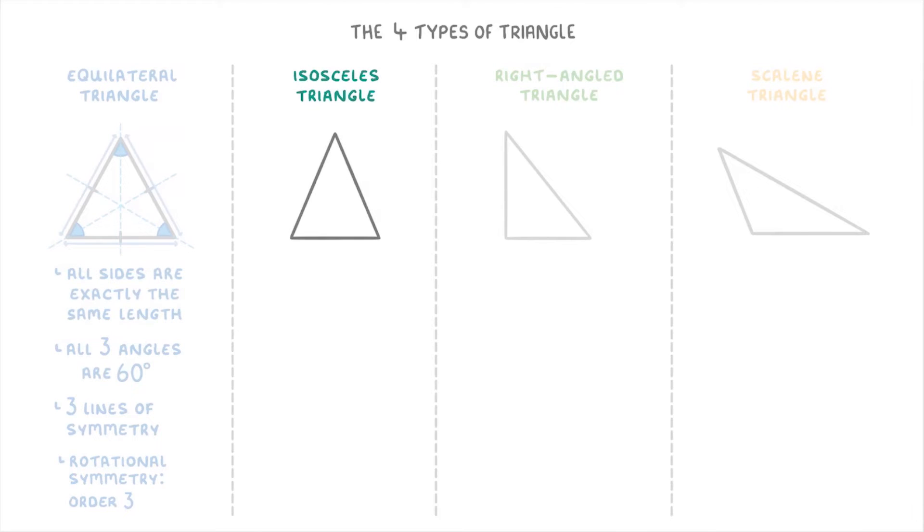Next up is the isosceles triangle, whose key feature is that they have two sides that are the same length. And again, you'll normally see the equal sides drawn with these little dashes on. They also have two angles that are the same size, one line of symmetry, and no rotational symmetry.